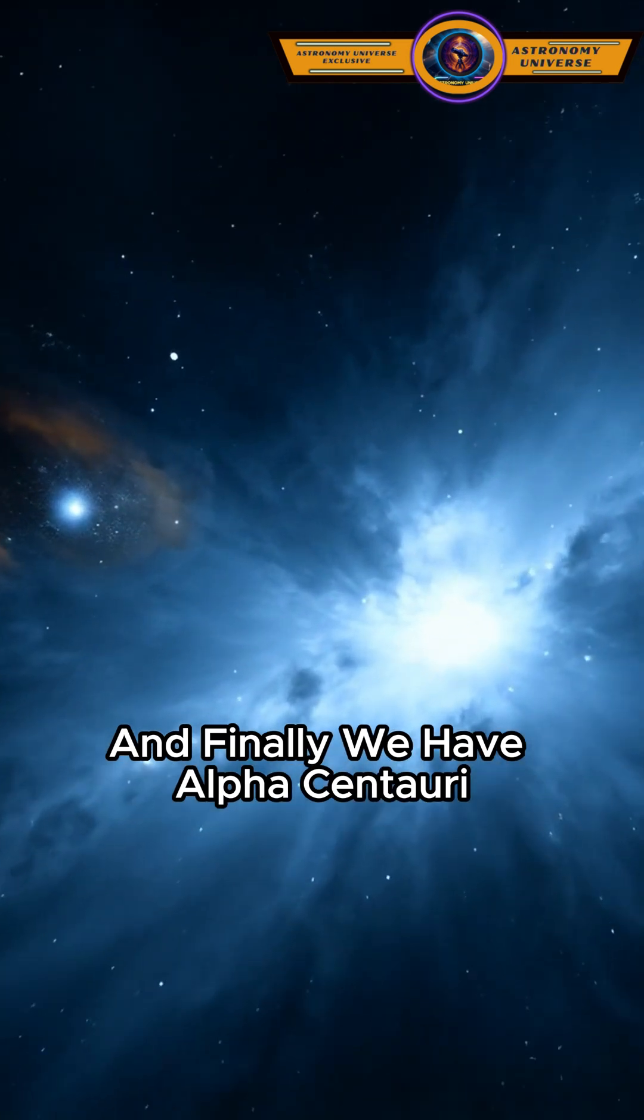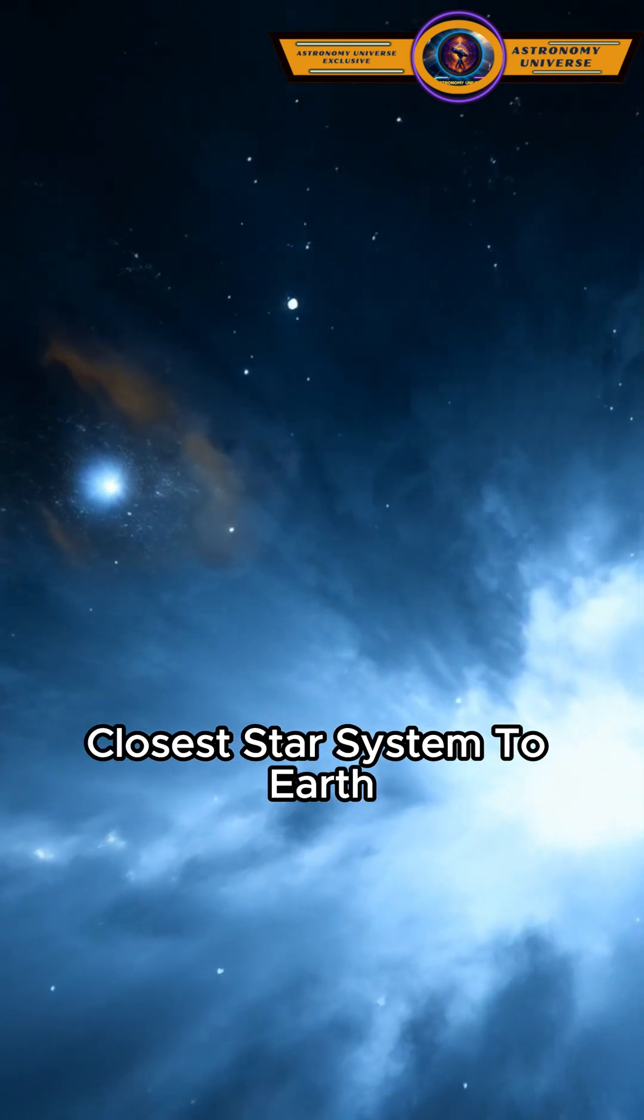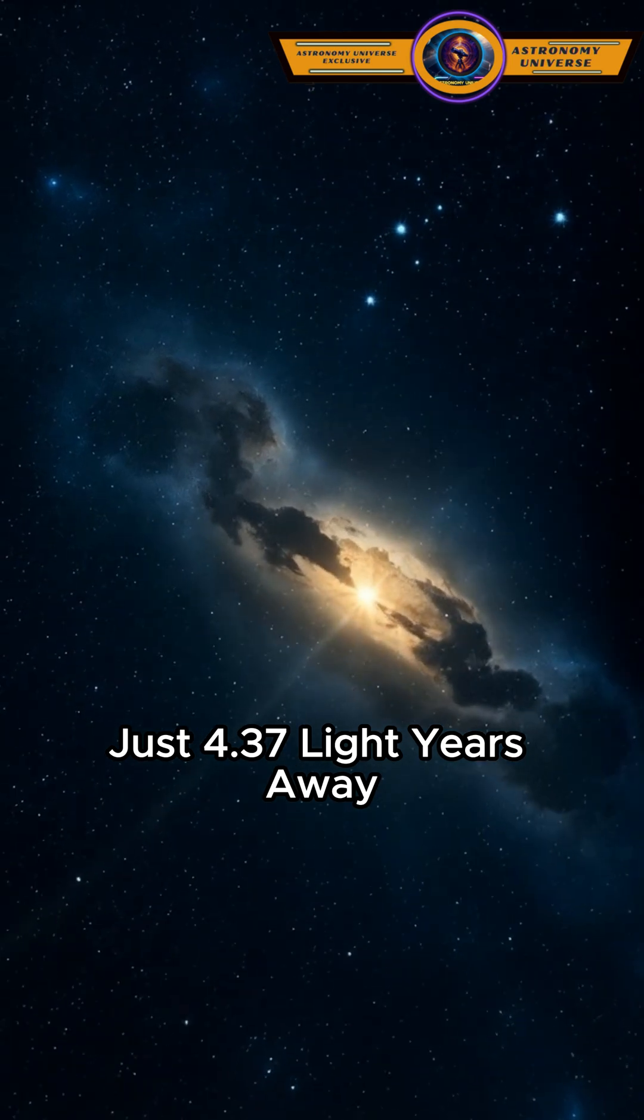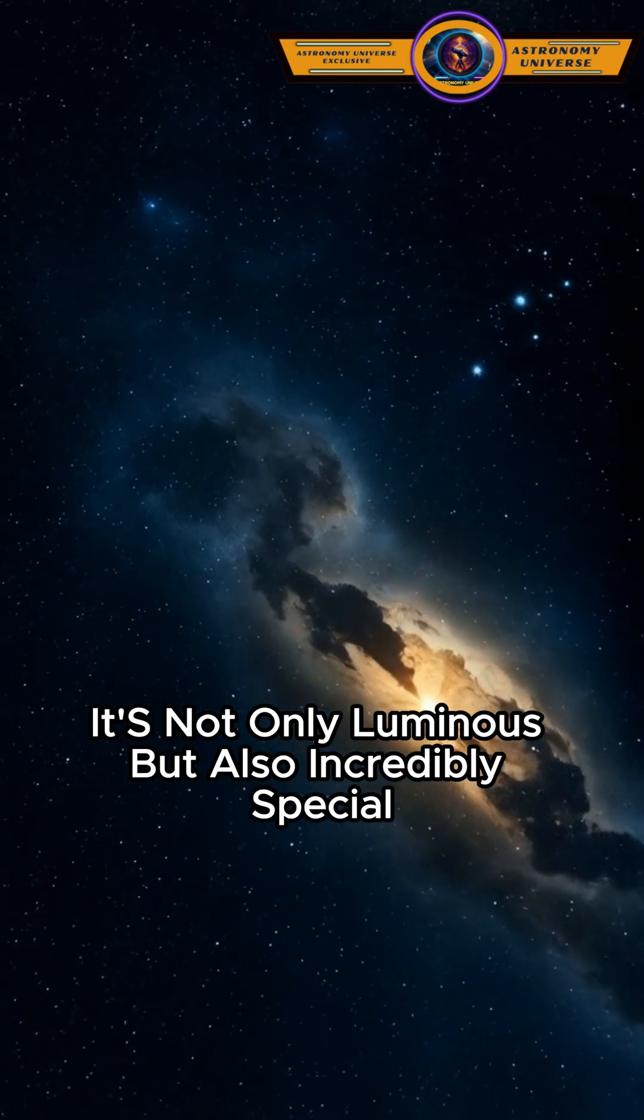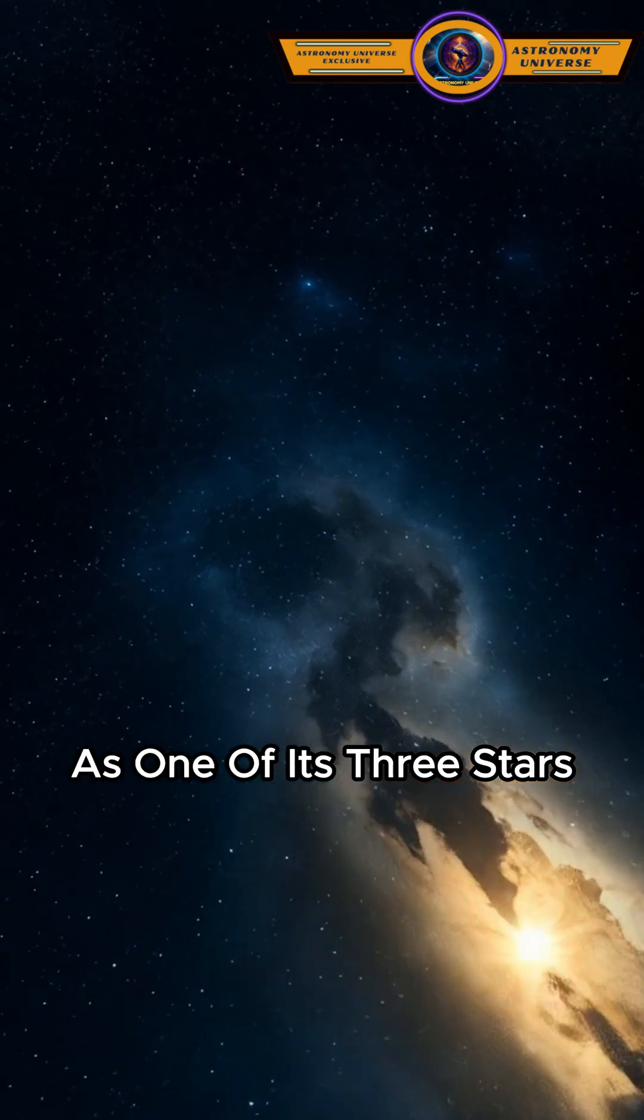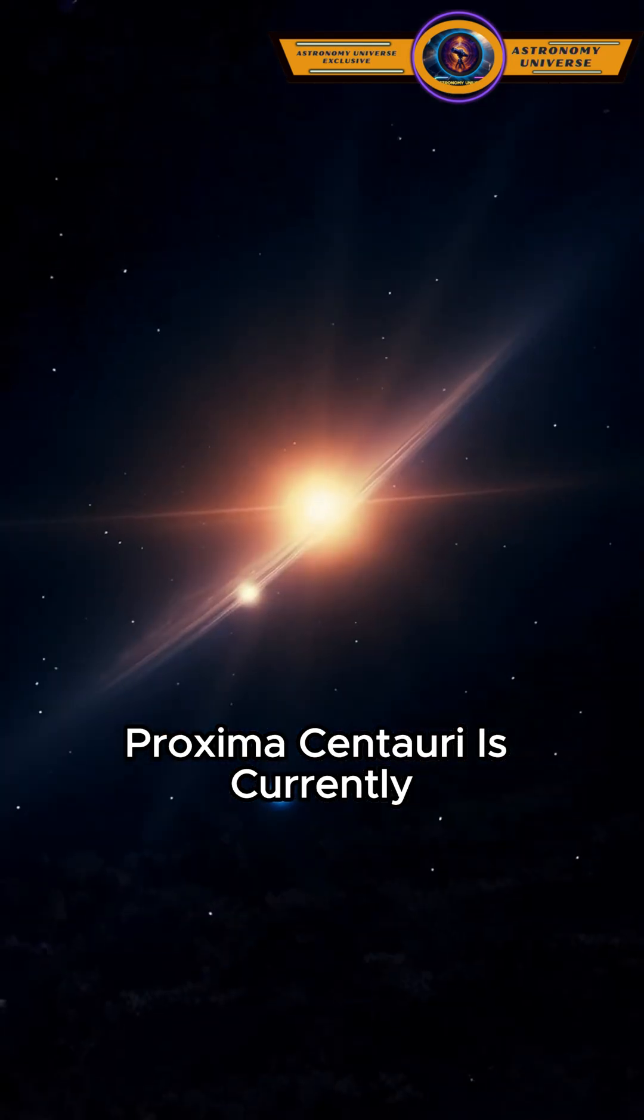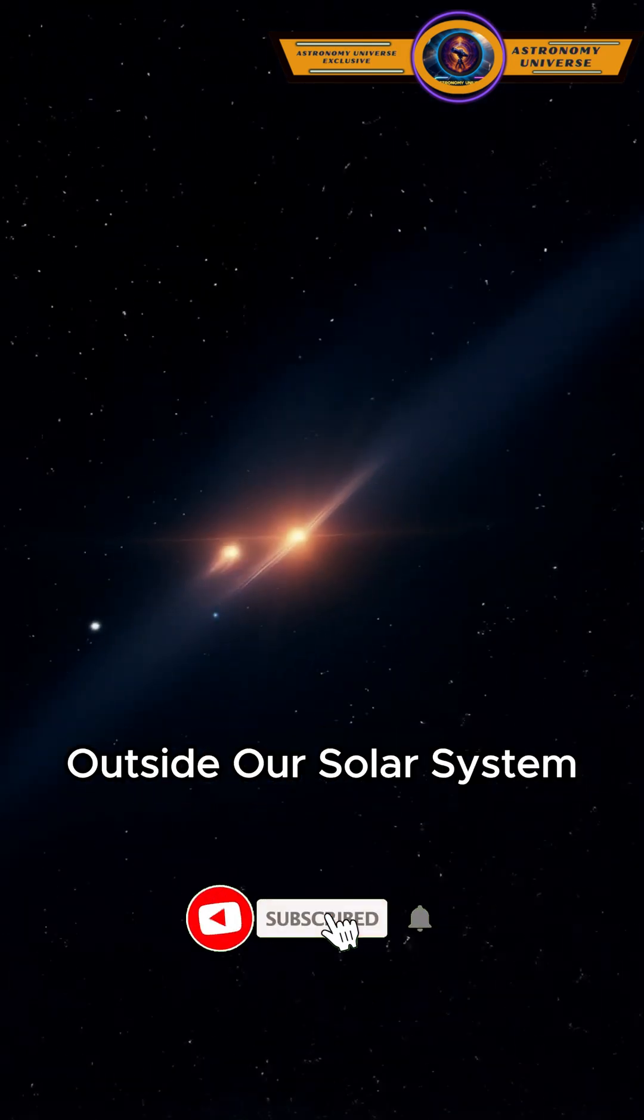And finally, we have Alpha Centauri, the closest star system to Earth, just 4.37 light-years away. It's not only luminous but also incredibly special, as one of its three stars, Proxima Centauri, is currently the nearest known place that might host a planet outside our solar system.